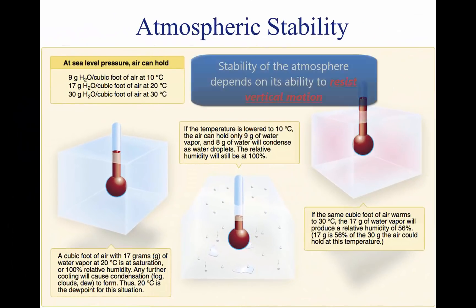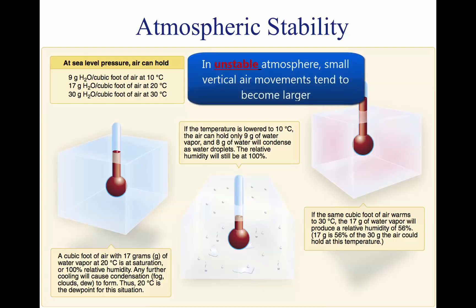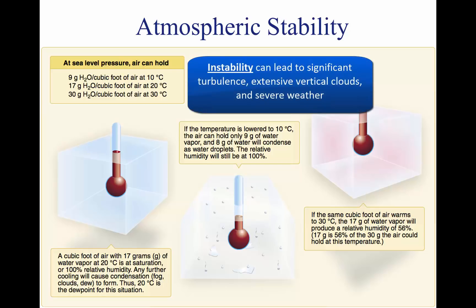The stability of the atmosphere depends on its ability to resist vertical motion. A stable atmosphere makes vertical movement difficult, and small vertical disturbances dampen out and disappear. In an unstable atmosphere, small vertical air movements tend to become larger, resulting in turbulent airflow and convective activity. Instability can lead to significant turbulence, extensive vertical clouds, and severe weather.